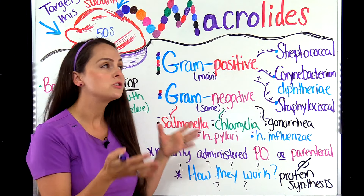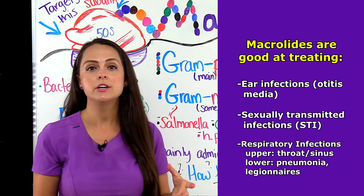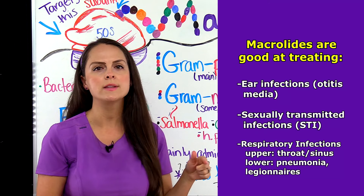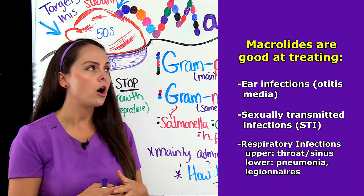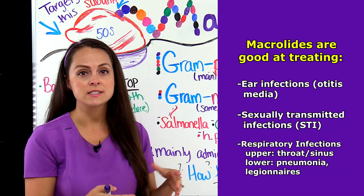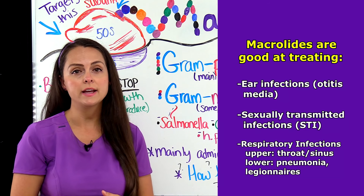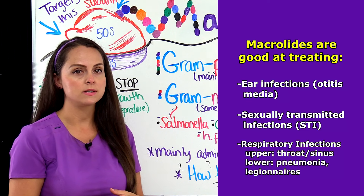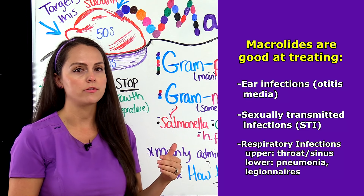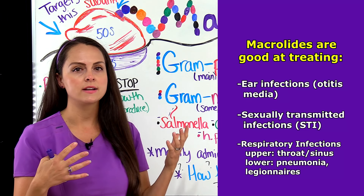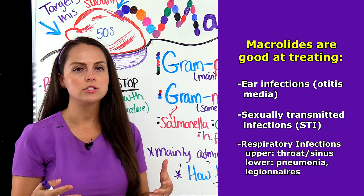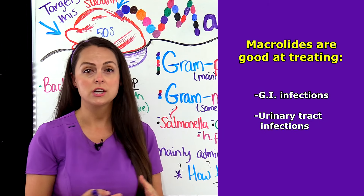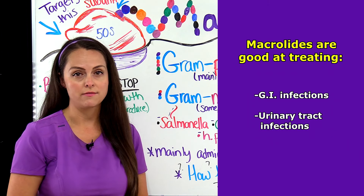Because the macrolides target these certain things, they're really good at treating certain cases of ear infections, especially ones that affect the middle ear. Also sexually transmitted infections, as you've seen with chlamydia and gonorrhea, and infections that invade the respiratory system, such as the upper and lower part of the tract — your throat, your sinuses, and anything that could lead to pneumonia. Plus it can help target GI infections and urinary tract infections.